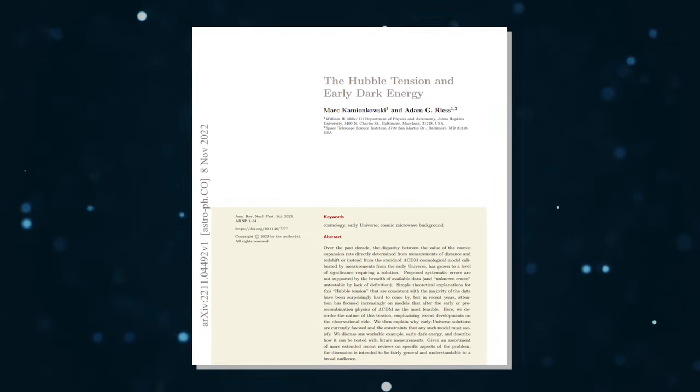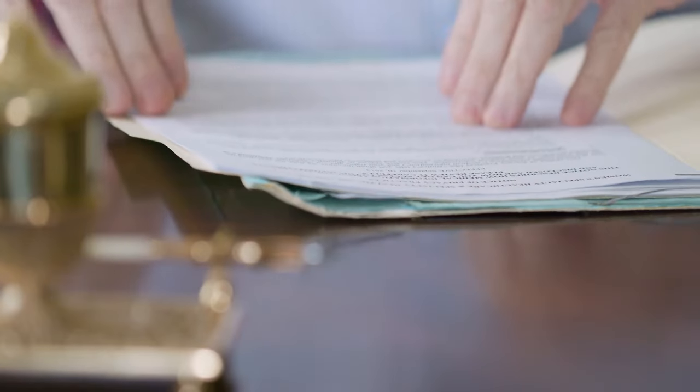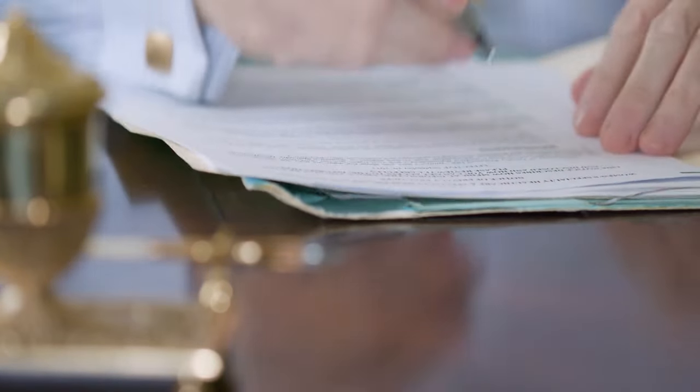The study was conducted by Mark Kamienkowski, a professor of physics and astronomy at Johns Hopkins University, and Adam G. Reiss, the Bloomberg Distinguished Professor at JHU and the Space Telescope Science Institute. Their paper, titled Hubble Tension and Primordial Dark Energy, is under review for publication in the Annual Review of Nuclear and Particle Science.